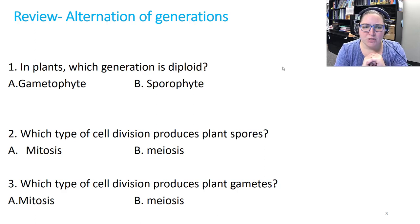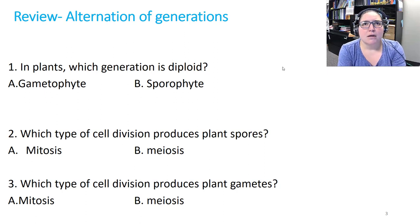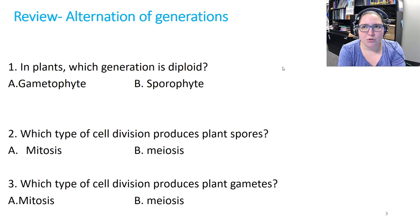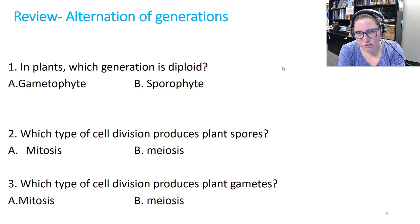Number two: which type of cell division produces plant spores — is it mitosis or meiosis? It's helpful to think about who produces the spores. The sporophyte generation produces spores, and spores are haploid because they mature into the haploid gametophyte generation. To go from diploid (2n) to haploid (n) you have to do meiosis. So the answer to number two is B.